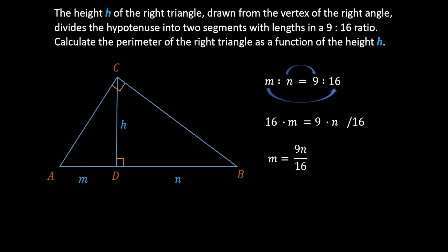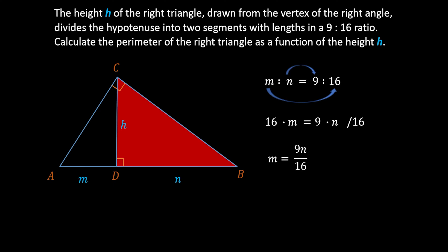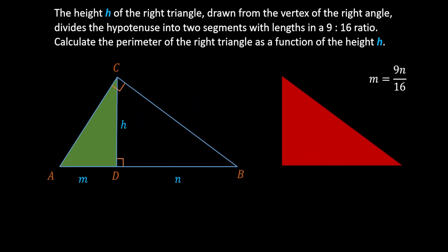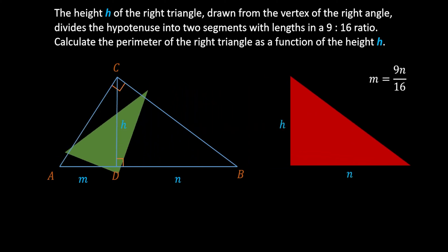The height h divides our triangle into two separate right triangles: triangle DCB and triangle ADC. Looking at the angle at vertex B of triangle DBC and the angle at vertex C of triangle ADC, we can conclude these two angles are the same, because both lines of these angles are perpendicular to each other. Therefore, triangles DCB and ADC must be similar triangles.